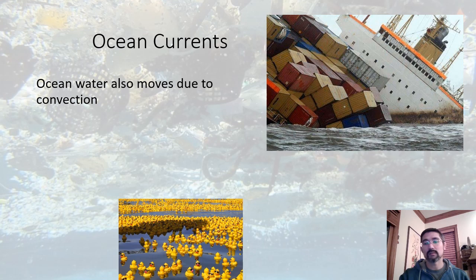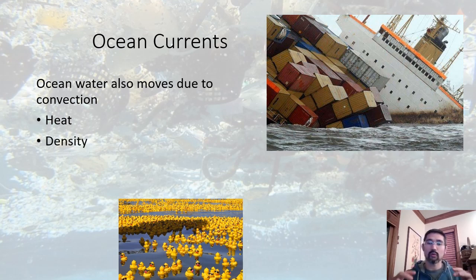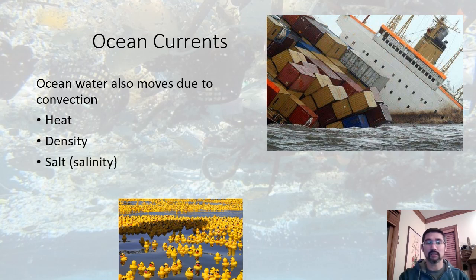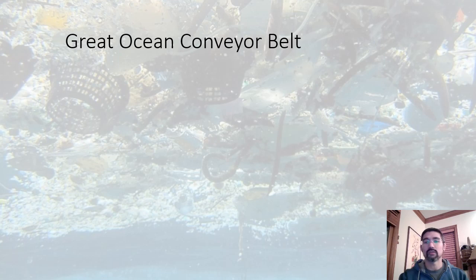The journey of these rubber duckies is helping scientists understand how ocean currents work. Not only does air move due to convection, and not only does the Earth's mantle move due to convection — water also moves due to convection. It moves due to heat, but water also tries to achieve equilibrium in density and salinity, causing circulation in the ocean. In addition, ocean water movement is affected by wind and tides. All five of these things combine to give us the Great Ocean Conveyor Belt.